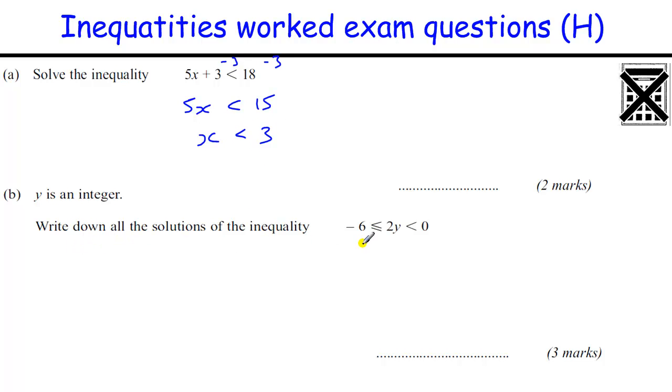y is an integer, so we've got 2y. So we've got 2y, 0 divided by 2 is still 0, minus 6 divided by 2 is minus 3, so we're going from minus 3, minus 2, minus 1, but not 0, because it's not included.